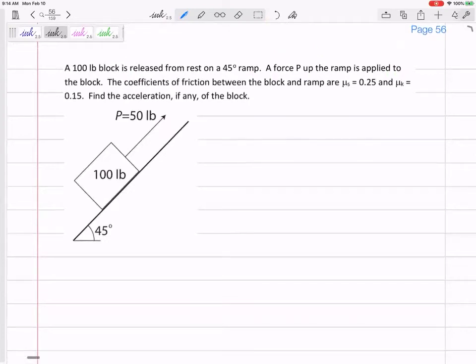Let's go. All right, so what if I have a 100 pound block on this 45 degree incline? It looks like a pretty steep incline.